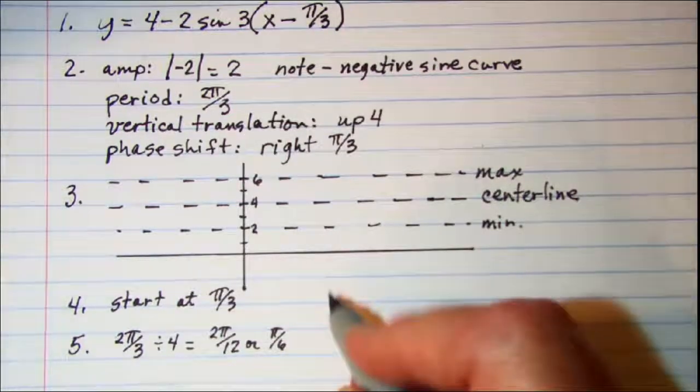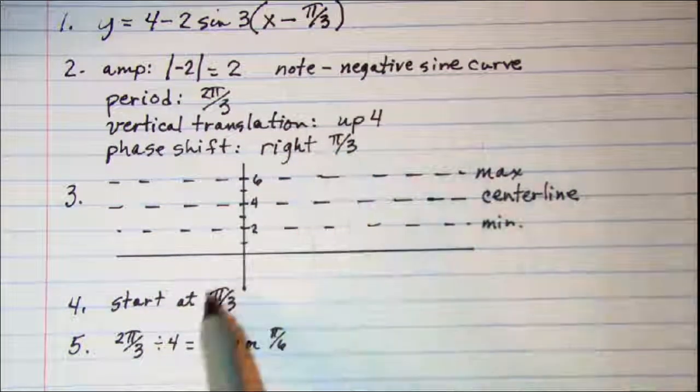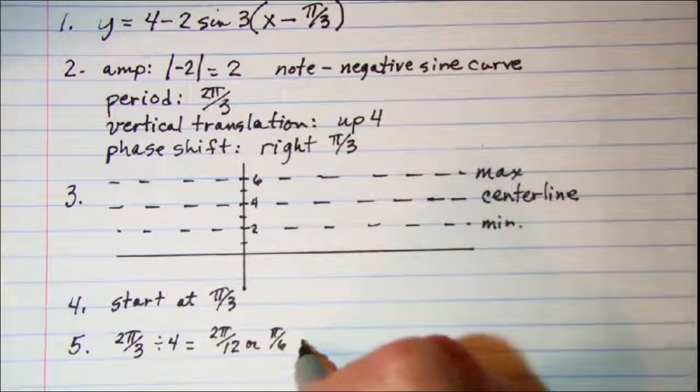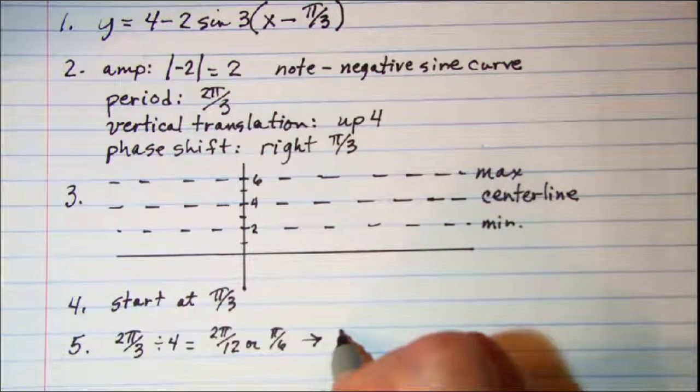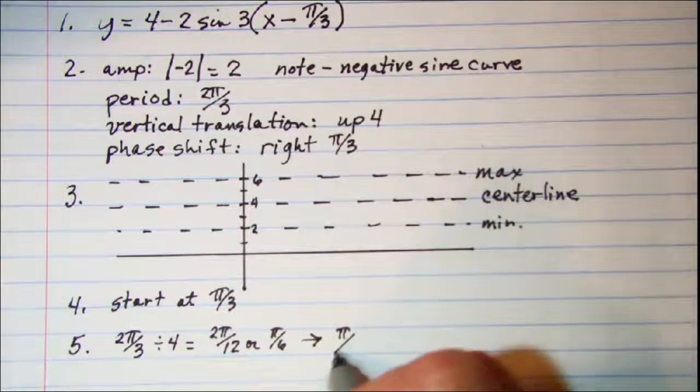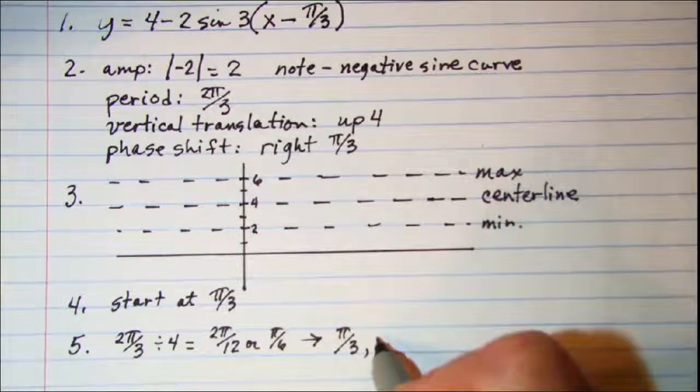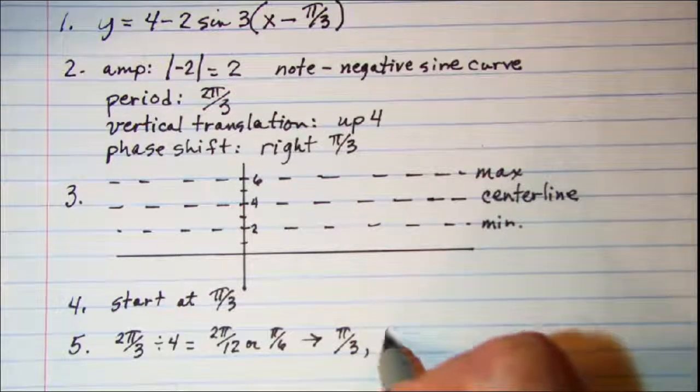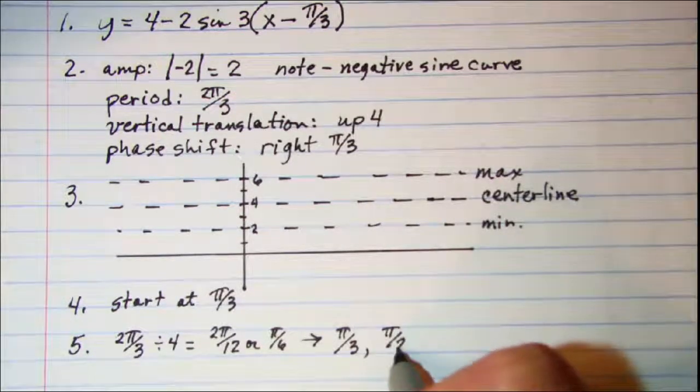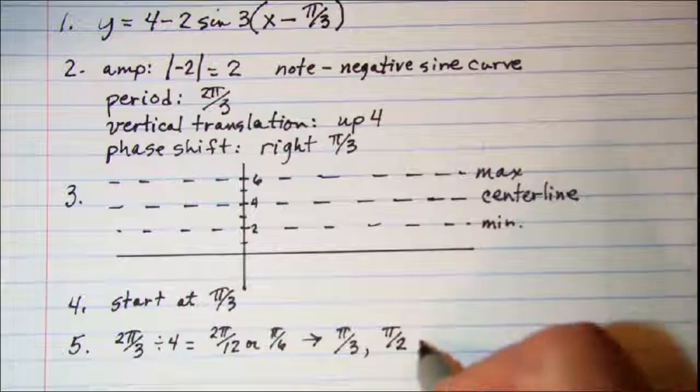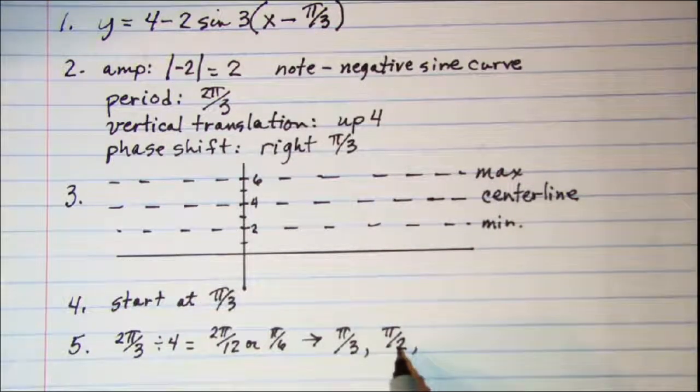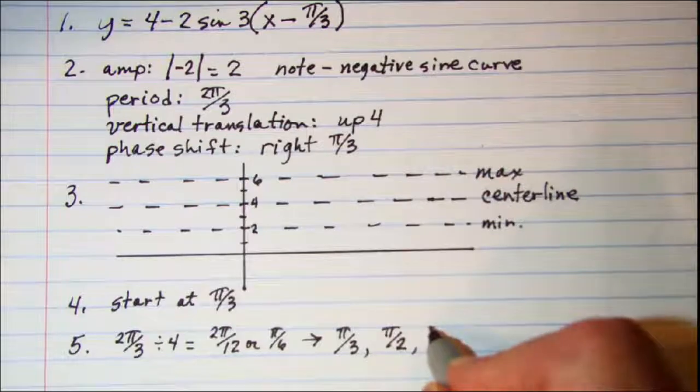And that means then from our starting point we start at pi over 3. And then we add pi over 6 to that, we get 2 pi over 3. And then add pi over 6 to that, we get 2 pi over 3.